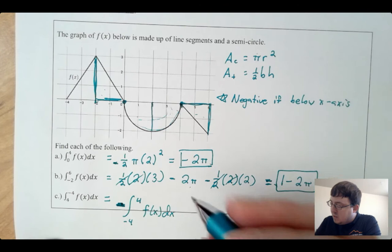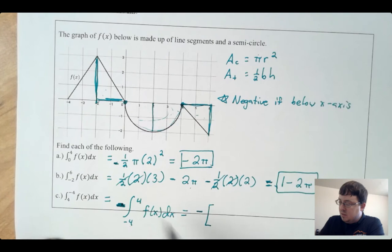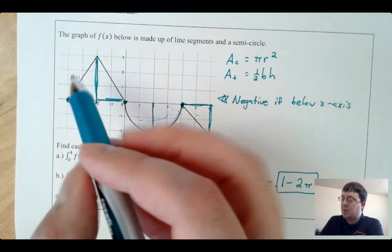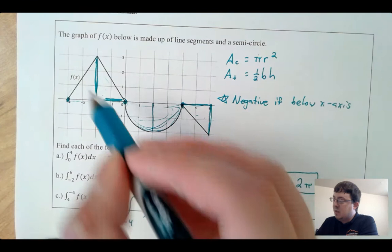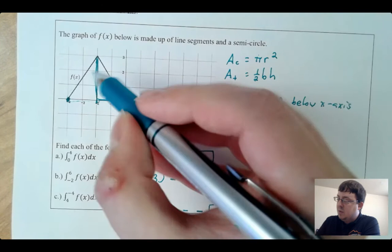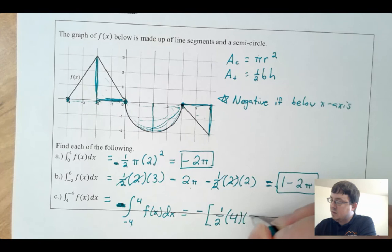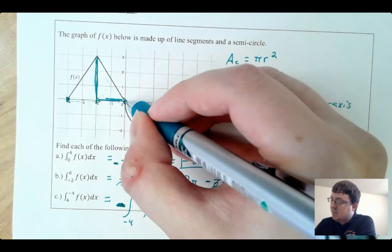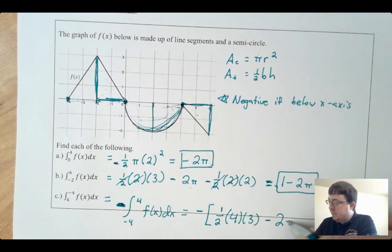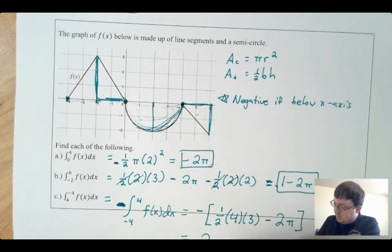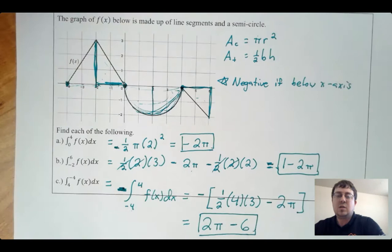So keeping that negative out front, I need the integral from negative 4 to 4. I need this whole triangle plus this semicircle. The whole triangle is above the x-axis, so it's positive: one half times base 4 times height 3. And the semicircle's integral we already found is negative 2π. Reducing this, you get positive 2π minus 6 for the definite integral.